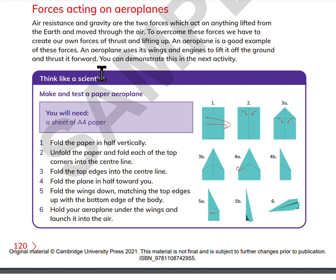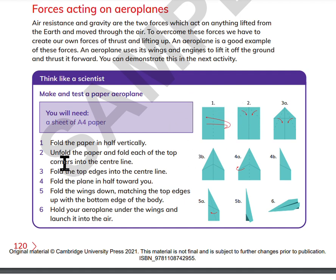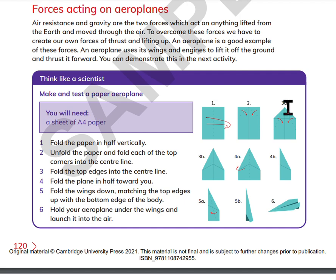Think like a scientist. Make and test the paper airplane. You will need a sheet of A4 paper. Step 1: fold the paper in half vertically, like picture number 1. Step 2: unfold the paper and fold each of the top corners into the center line, so it's like picture 2. Step 3: fold the top edges into the center line.